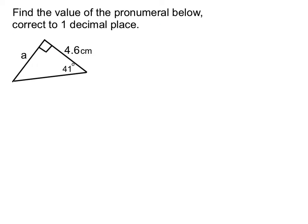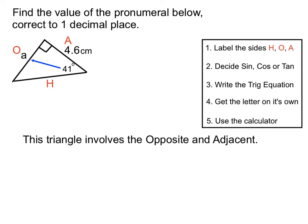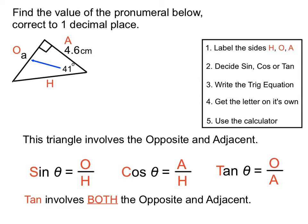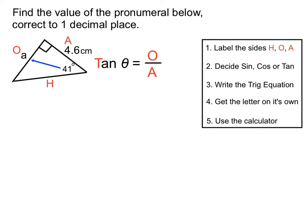Another example. The hypotenuse doesn't have anything on it this time. The opposite side from the angle is where the letter a is, and the adjacent side has 4.6 on it. We're looking to involve the opposite and adjacent in our trig ratio. The tan ratio uses the opposite and adjacent, so we'll choose it for our question.